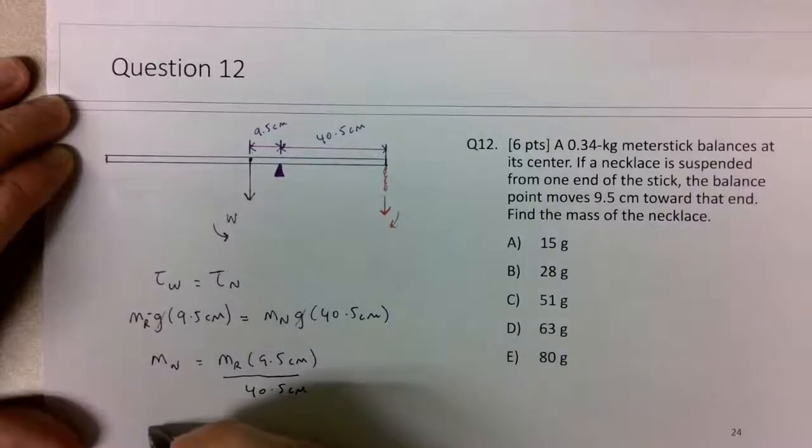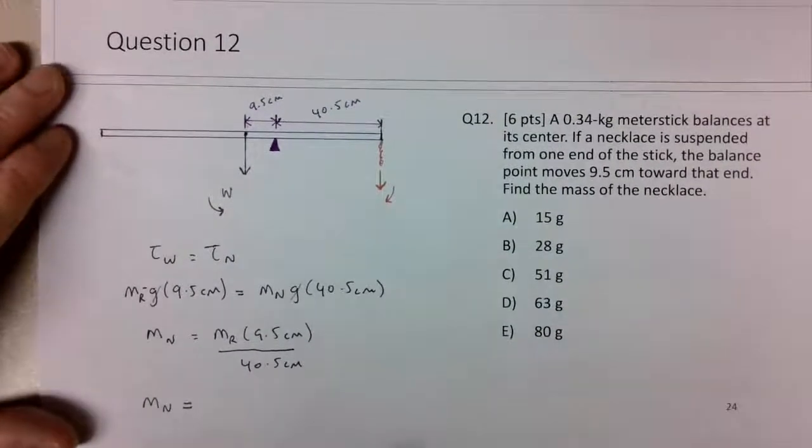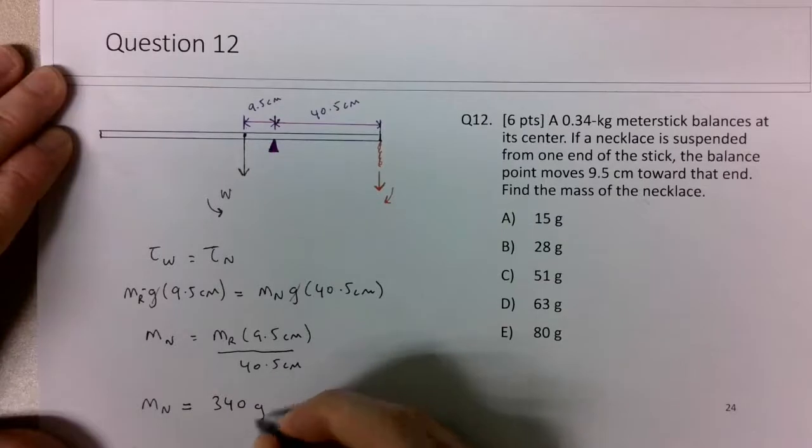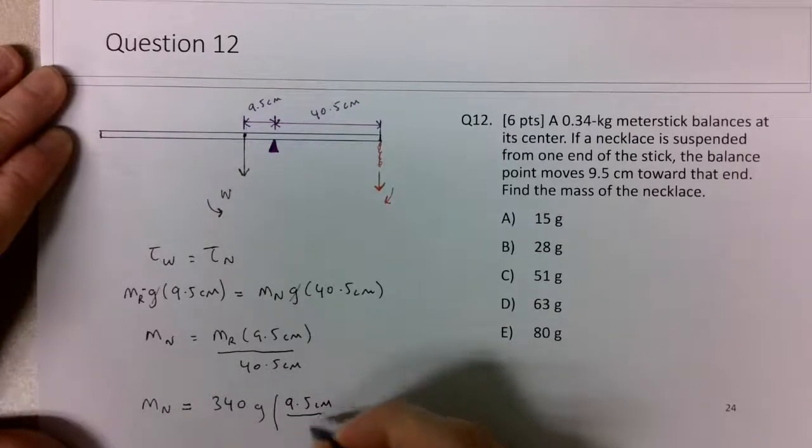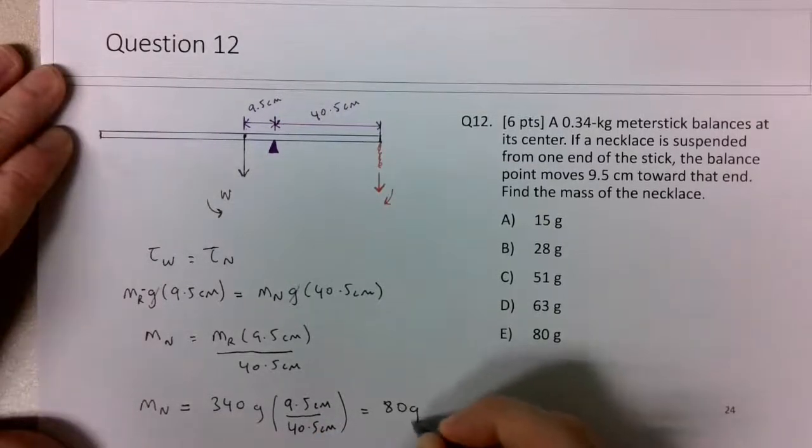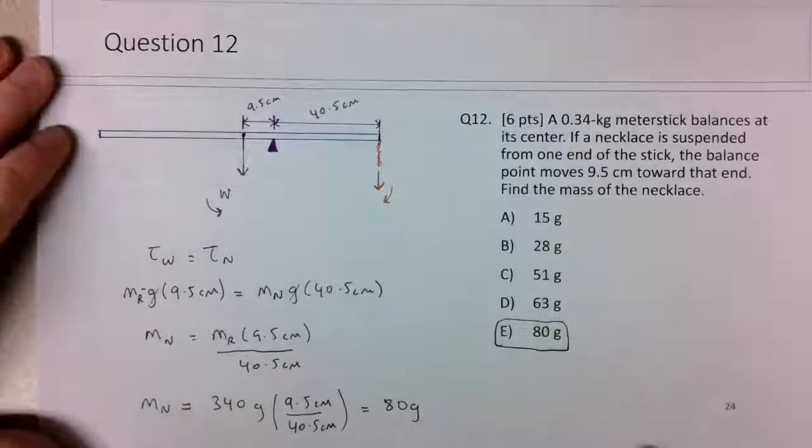And since the answer is in grams, I'll convert that 0.34 kilograms to 340 grams times the 9.5 centimeters over the 40.5 centimeters. And then I should give you 80 grams. So the choice E is the correct answer.